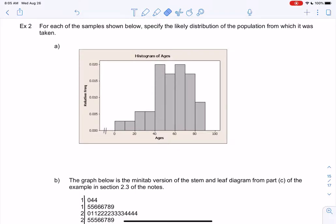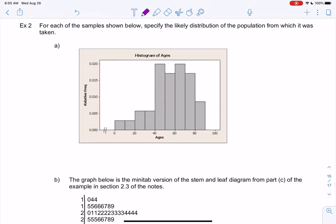All right, we made it to the final video of chapter two. We're going to finish up distribution shapes. So for each of these following examples, we're going to specify the likely distribution. Distribution is shape. And we're saying likely because again, these are just samples and the shape might fill out a little bit differently if we had collected more data.